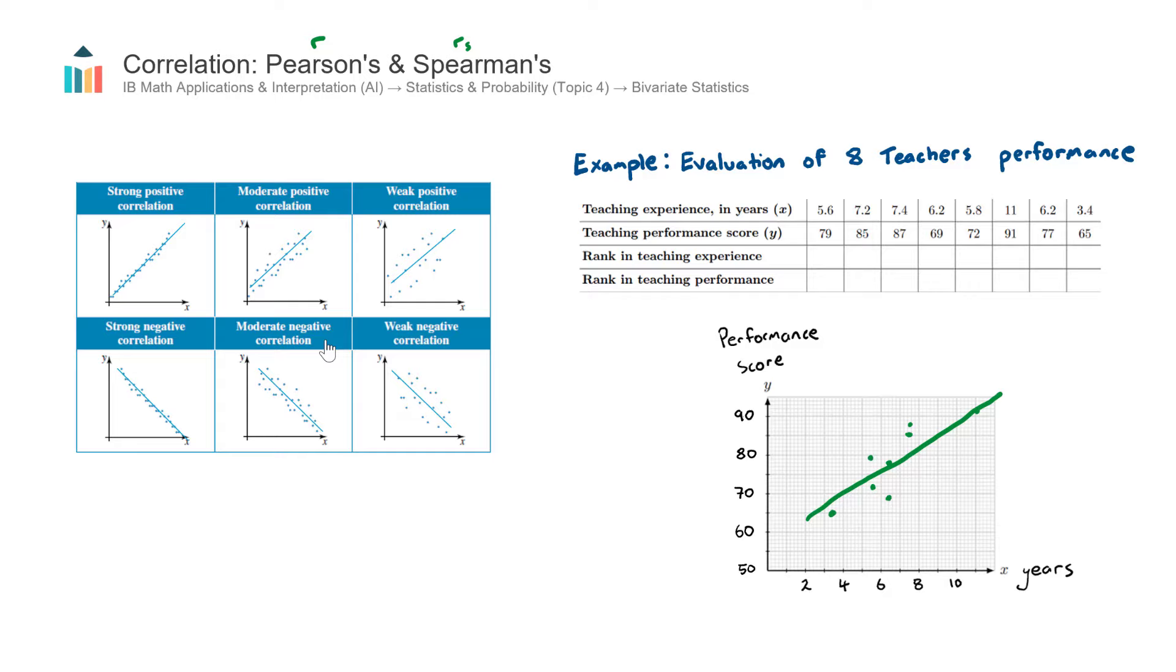The second description is the strength. And the way to think about that is how close are the data points to the line of best fit. So these two left hand ones here, both strong positive and strong negative, the data points are very close to the line. So in other words, the line of best fit really follows the trend very closely. The middle two here we call moderate. So the data points are kind of close to the line. The trend line kind of summarizes it nicely. And the two right ones here, both weak positive and weak negative, the data points are quite a long way away from the trend line. And the line of best fit here doesn't actually summarize the trend very well.